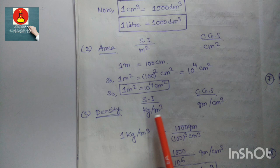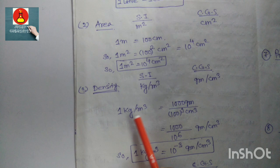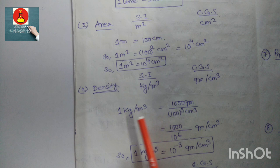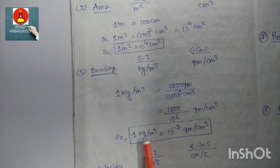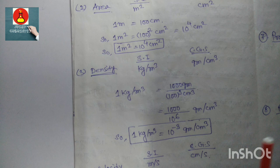Density: SI unit is kg/m³ and CGS unit is g/cm³. One kg/m³ equals 1000 g divided by (100 cm)³, which is 1000 divided by 10⁶ g/cm³. So 1 kg/m³ equals 10⁻³ g/cm³.